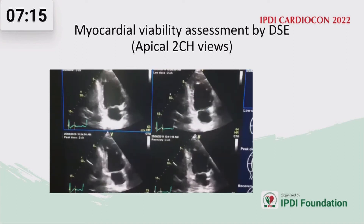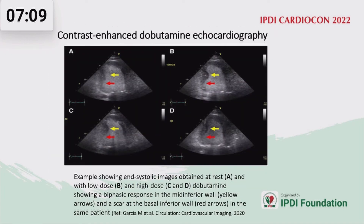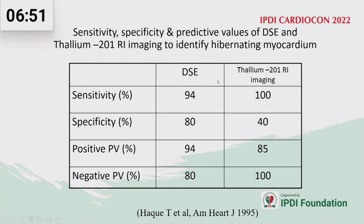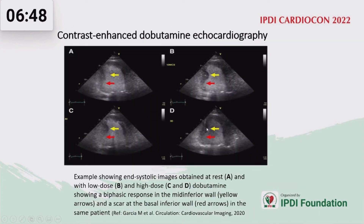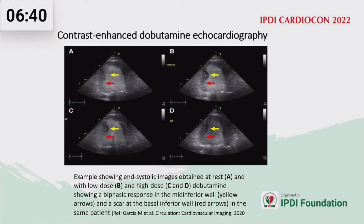This patient underwent CABG with improved outcome after revascularization. An example of contrast-enhanced dobutamine echocardiography is shown — apical two-chamber view at baseline, low dose, and gradually high dose. The mid-inferior segment showed increased contractility at low dose, but with increasing dose there was deterioration — a biphasic response. The basal-inferior segment showed no change in systolic thickening, indicating scar or non-viable myocardium.